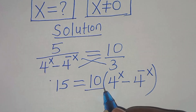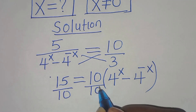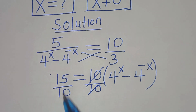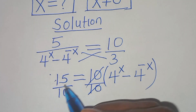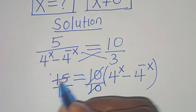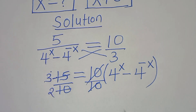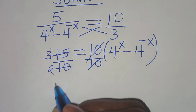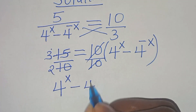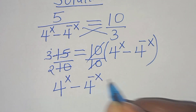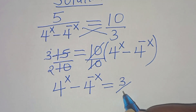The next step is to divide both sides by 10. We can simplify 15 by 5: 15 divided by 5 is 3, and 10 divided by 5 is 2. So essentially we have 4 to the power of x minus 4 to the power of minus x, and this is equal to 3 over 2.